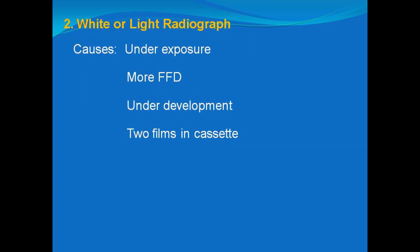The second radiographic fault we get is a white or light radiograph. This can be due to underexposure — using low kVp, low mA, or short exposure time — or we may be using more FFD than 90 centimeters, meaning our tube head and table distance will be more. Next is underdevelopment: the film is underdeveloped due to less concentration of solutions, particularly developer, or we may be using less time in the developer, resulting in a light or white radiograph.